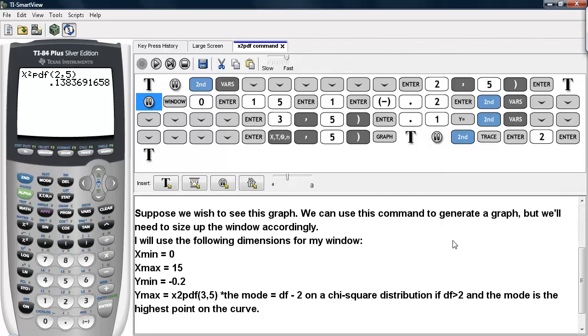The mode is the highest point on the curve, and the mode for a chi-square distribution is the degrees of freedom minus 2 if the degrees of freedom are greater than 2. Otherwise, it's considered to be 0.